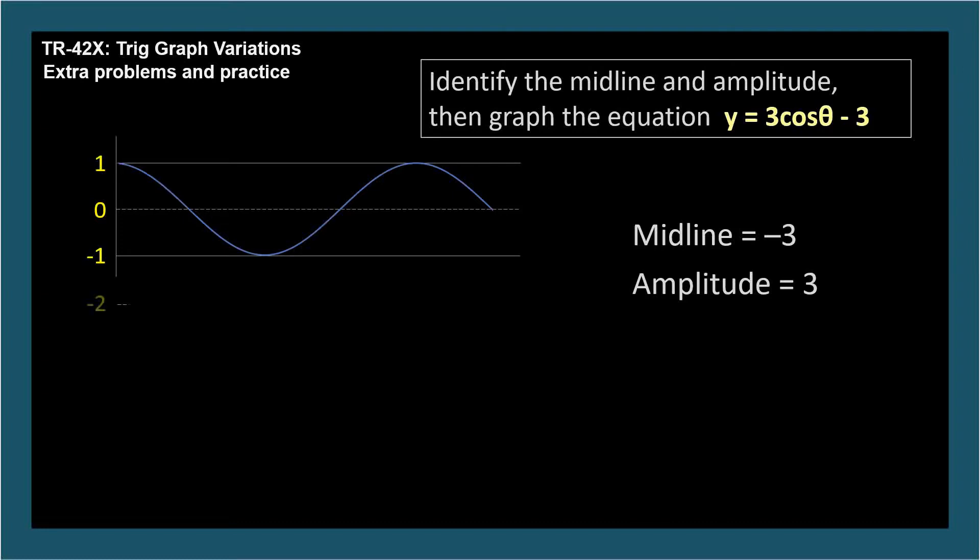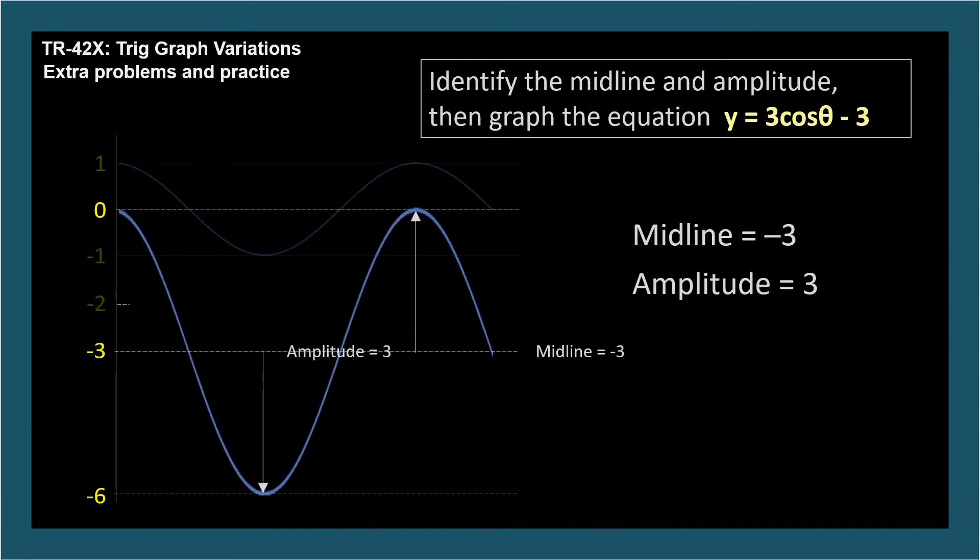Now let's graph the equation. We start with the midline. It's at negative 3, so we'll draw a dashed line and label it midline. Our cosine curve will oscillate evenly above and below this line. The amplitude is 3, so the curve will extend 3 above and 3 below the midline. 3 above the midline is y equals 0, and 3 below is y equals negative 6. The A parameter in the given equation is positive 3, so our curve's up and down directions correspond to the cosine, and we can sketch the curve: y equals 3 cosine theta minus 3.